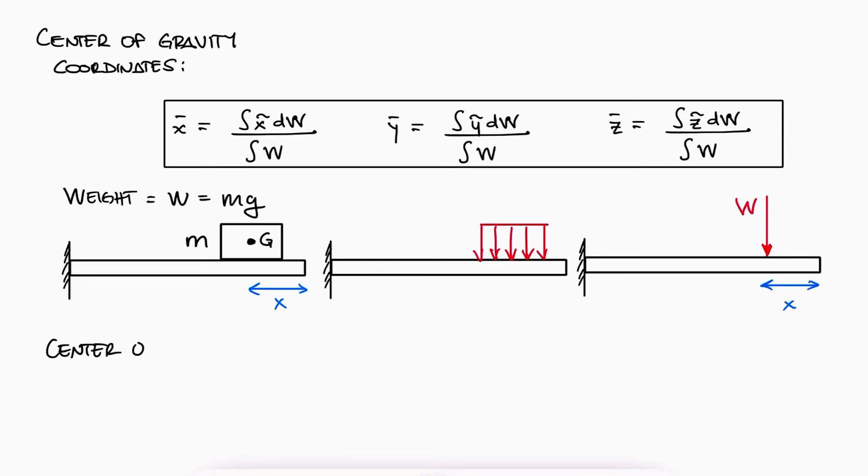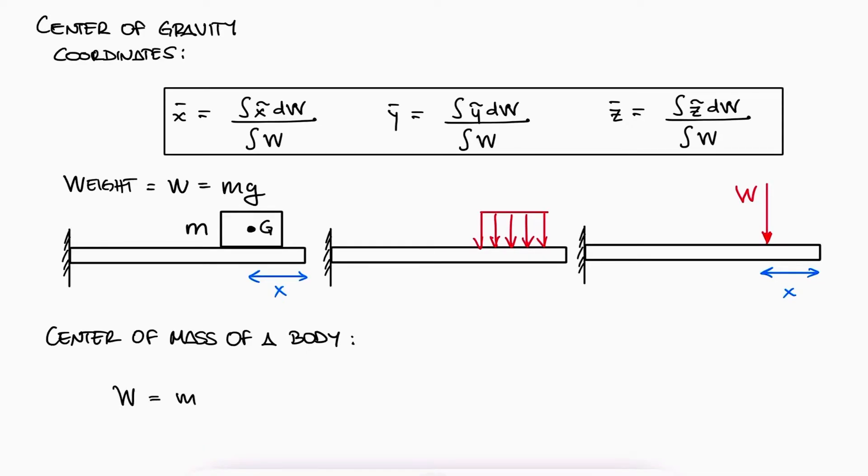For dynamics or accelerated motions of a body, we wouldn't really care about the weight but just the mass of that particular body. Therefore, we would look at the center of mass of a body instead of the center of gravity. But since weight is just mass times the gravitational acceleration constant g, meaning that dw is equal to g times dm, we can substitute dw by g dm and cancel g's out.